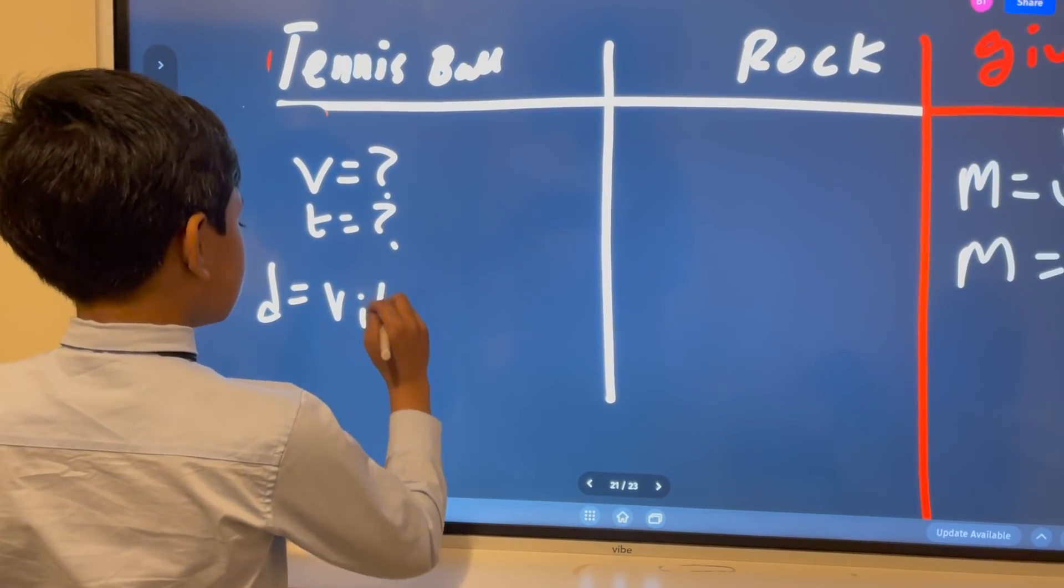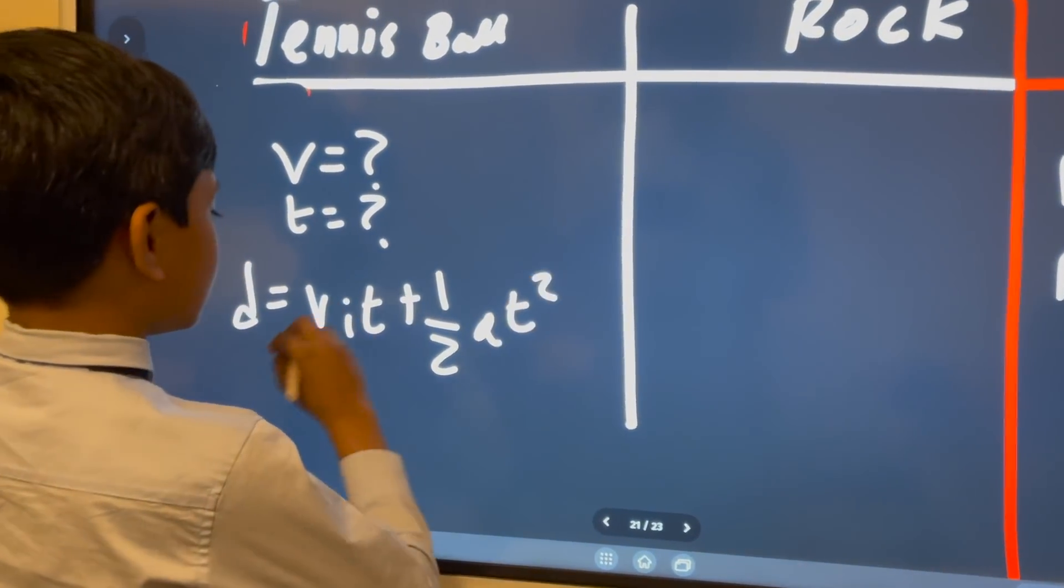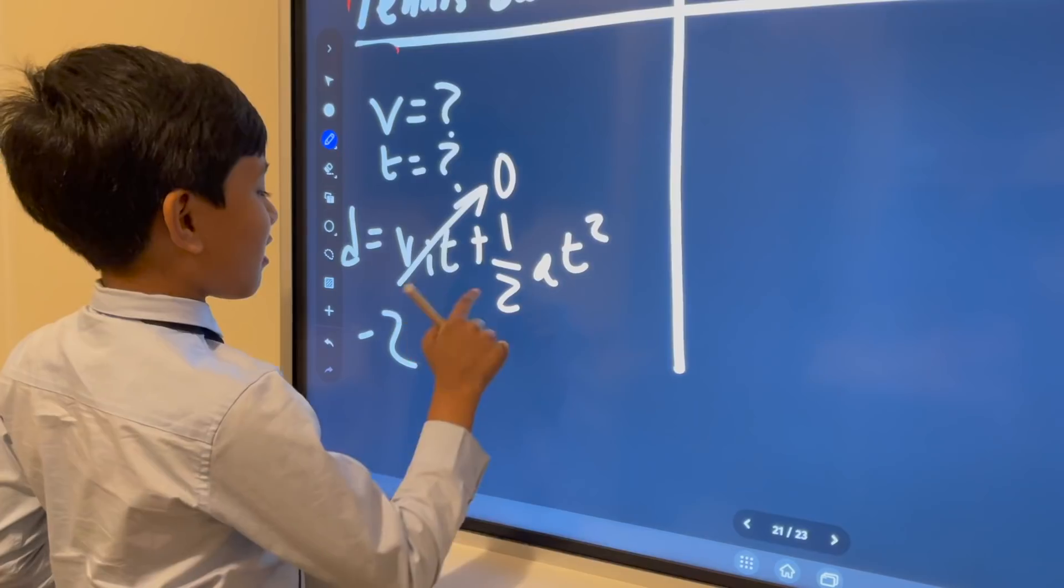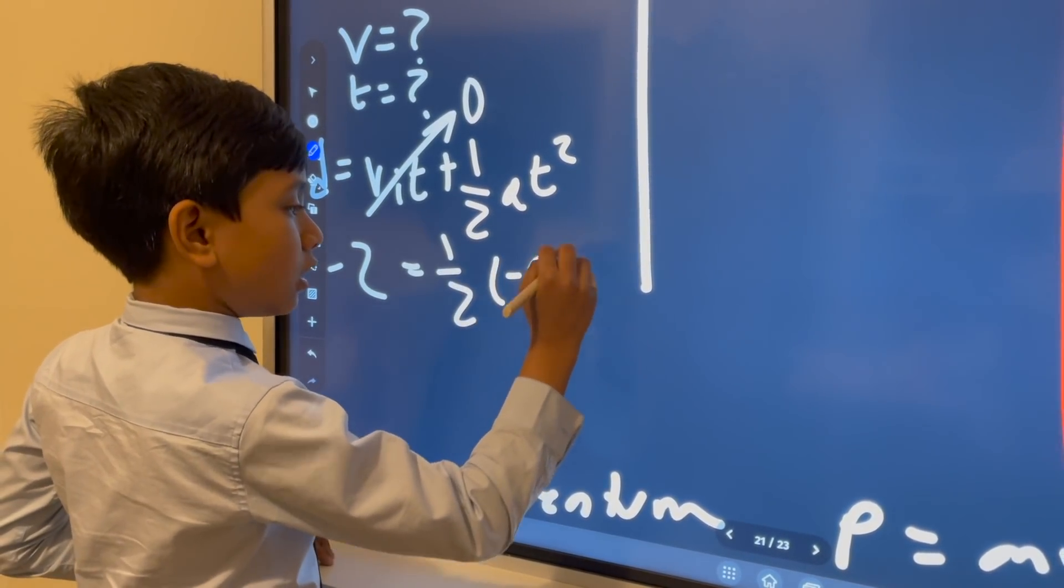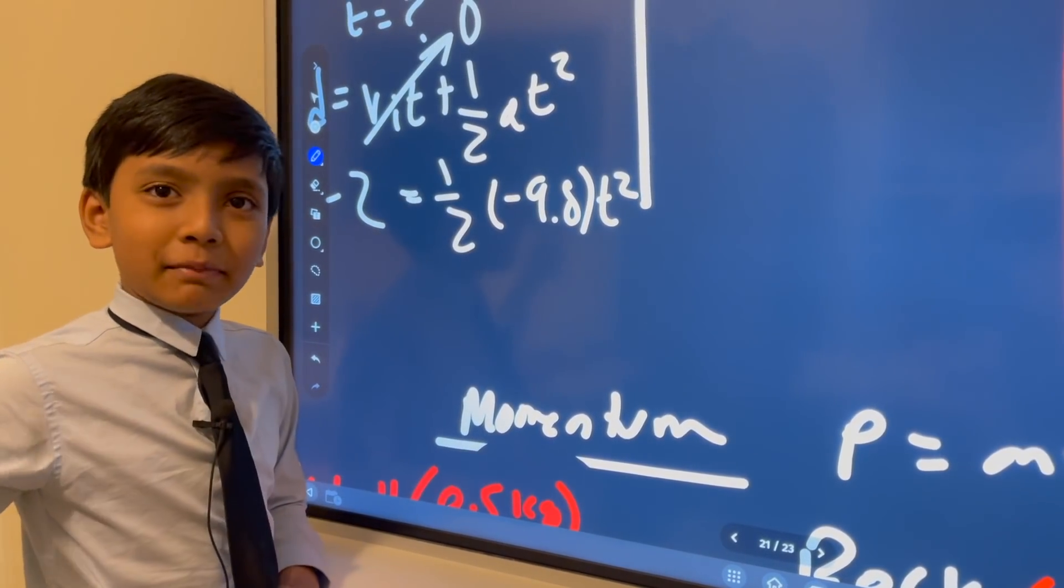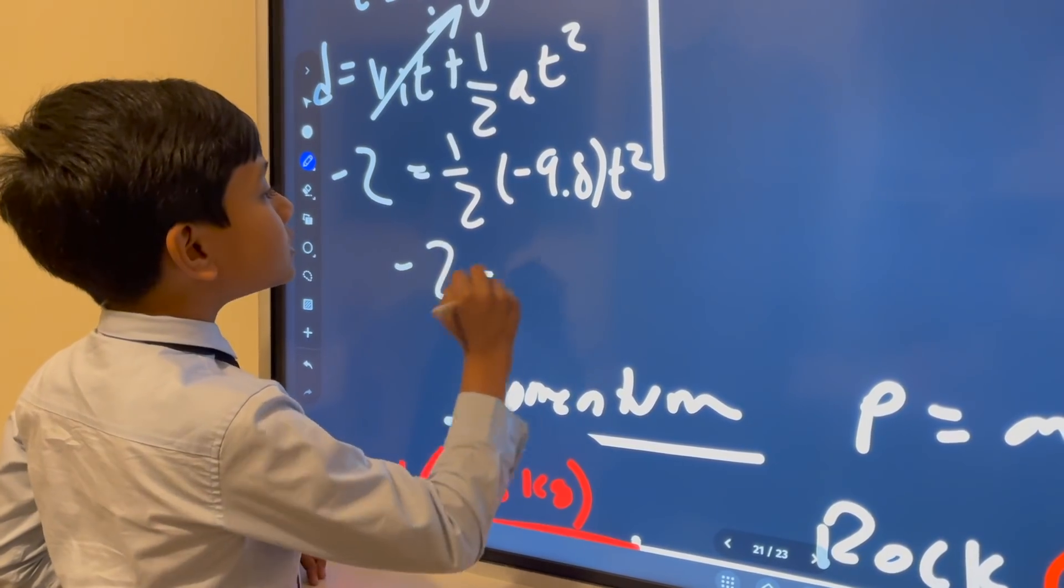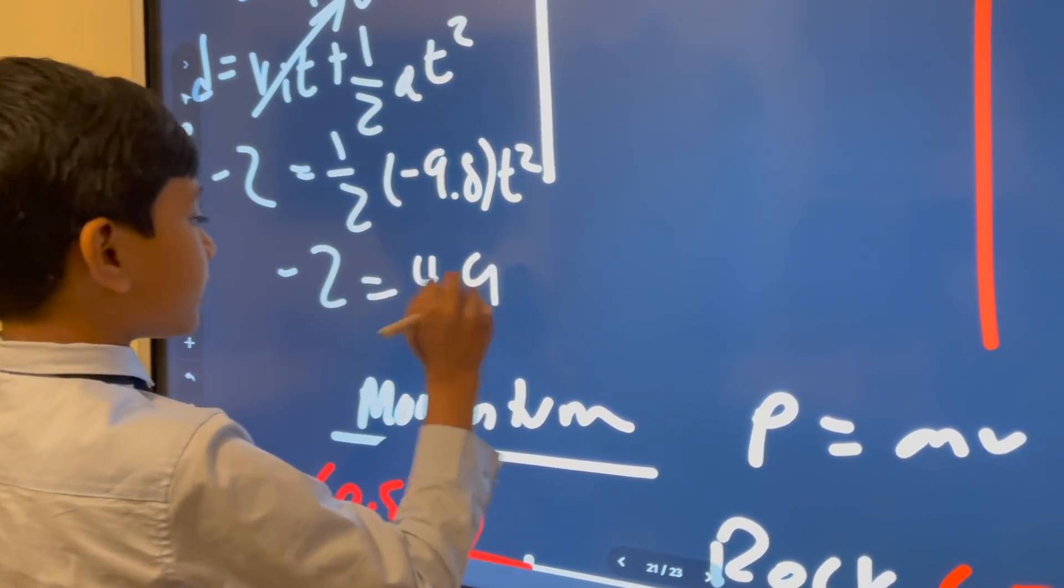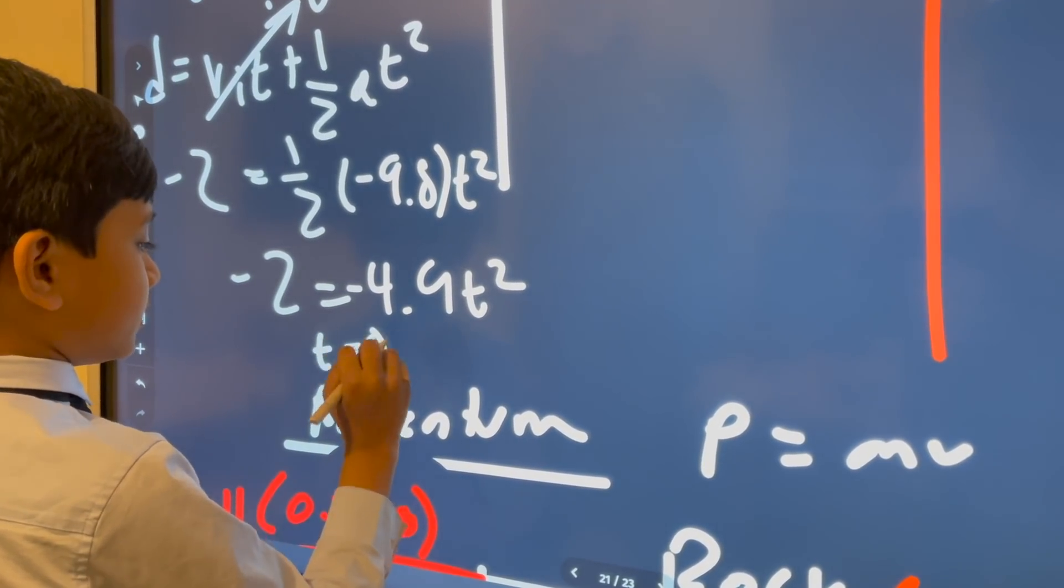V i t plus half a t squared. Now, v i t goes to zero, and that's equal to zero plus half a t squared. So after we do the math, then we get minus two equals minus four point nine t squared, which means t is just point six four.